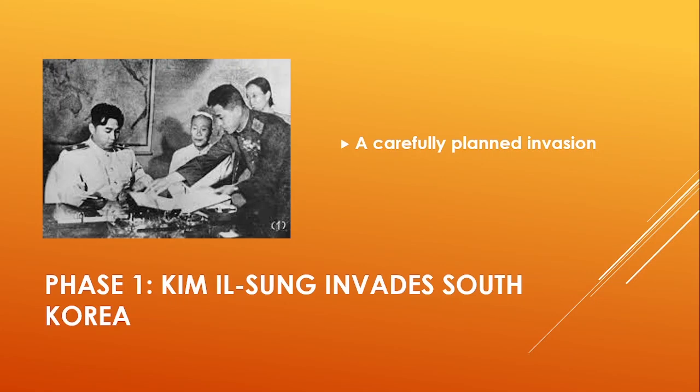Not only had the North Koreans gained experience fighting in the Chinese Civil War, but some had been specially trained in the Soviet Union for the invasion. Consequently, having taken the South Koreans by surprise, the DPRK forces quickly took Seoul, the Republic of Korea's capital. And by mid-September, their army had control of the whole peninsula, except for a small corner in the southeast that included the city and port of Busan. The DPRK was on the verge of taking total control of the whole peninsula, but in fact it was only the first phase of the war.